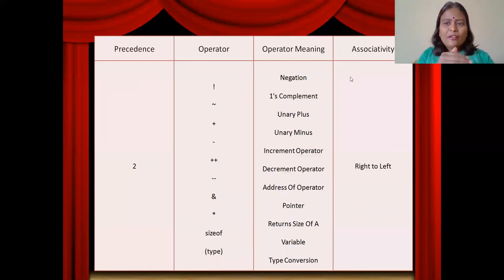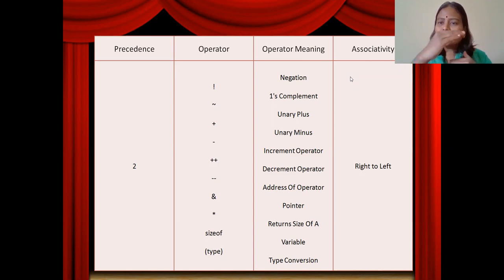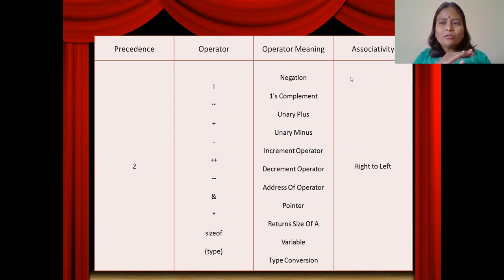The direction of evaluation is called associativity. When the precedence of operators happens to become equal, then associativity comes into the picture. If different priority operators are involved in the expression, no need to worry about associativity — only with the support of precedence itself we can understand how the compiler evaluates.